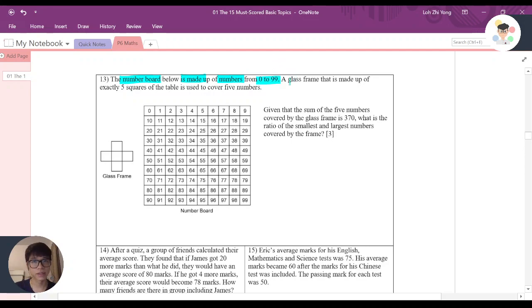Now, key thing here, a glass frame, there is a mirror of 5, exactly 5 square of the table is used to cover 5 numbers.